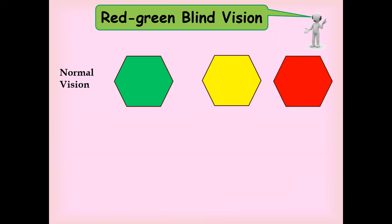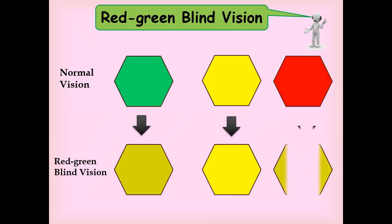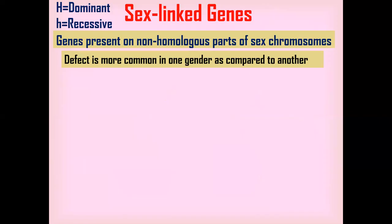In red-green blindness, normal vision for green and red colors is present in unaffected individuals. However, in a red-green blind person, the green cone cells are absent from the retina, producing a blended color between yellow and green, and the red color also appears blended. A person suffering from red-green blindness due to a defective allele or homozygous recessive condition cannot differentiate between red and green, and is therefore not allowed a driving license or to be a pilot.